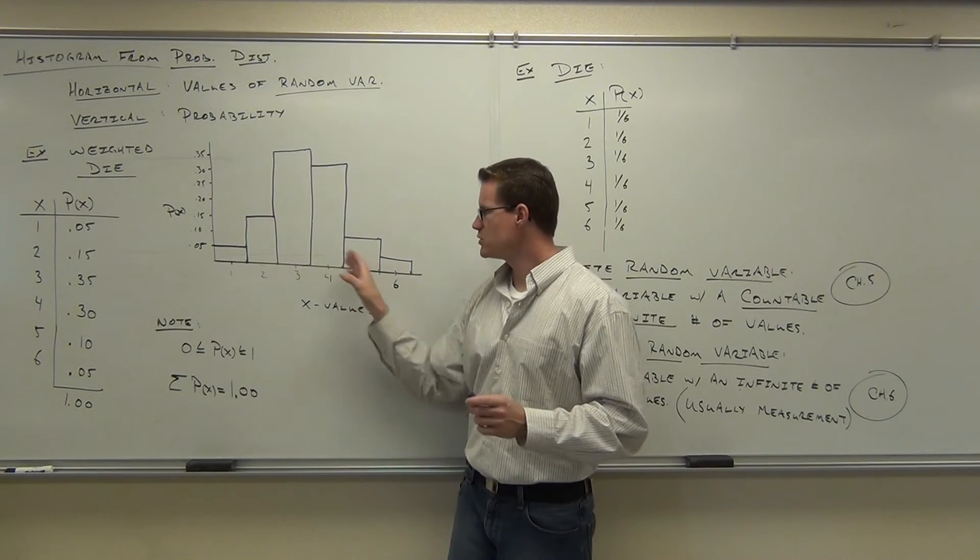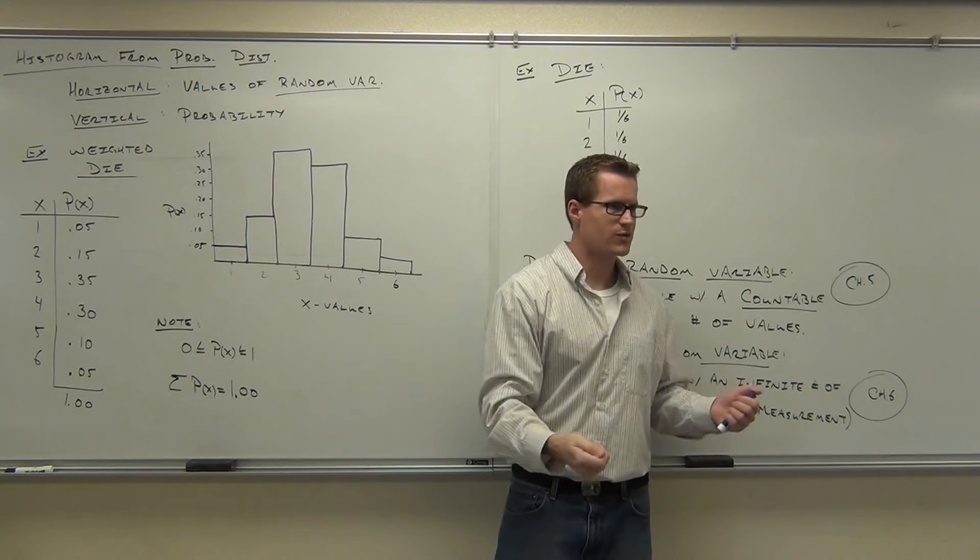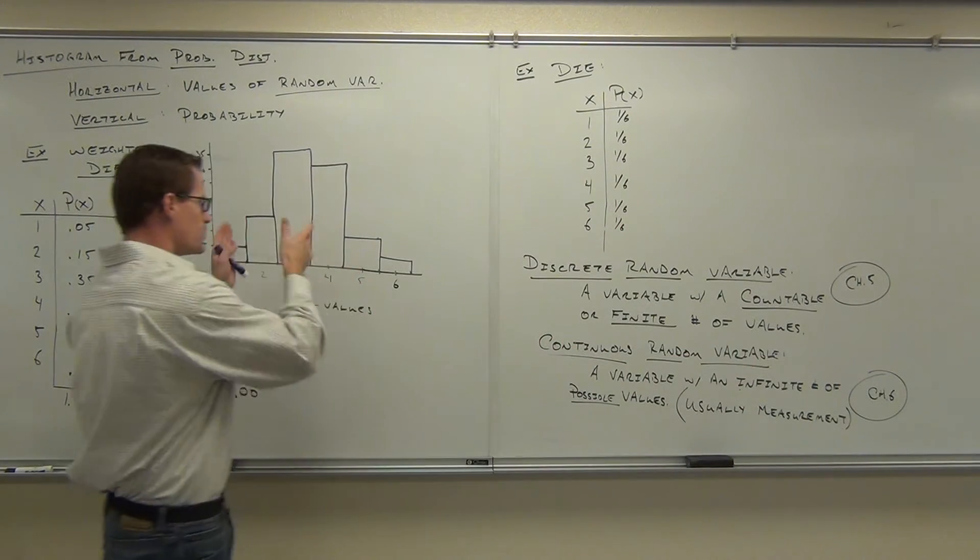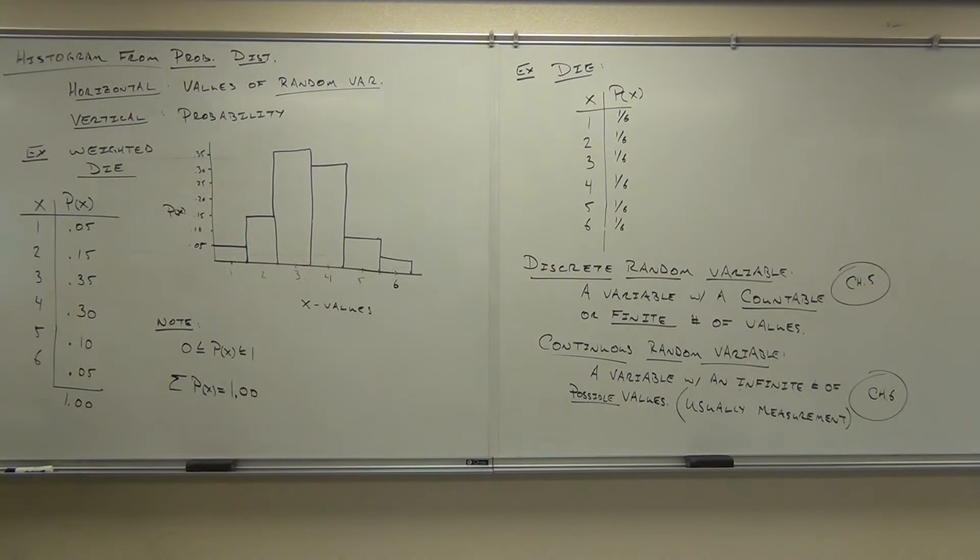Most often, you should be rolling threes and fours, and then after that twos, then fives, and then ones and sixes are equally spread. But you'll get all of them at some points, just most of them should be threes and fours. How many people feel okay with making up this histogram? Good, good.